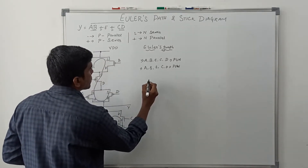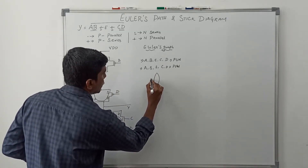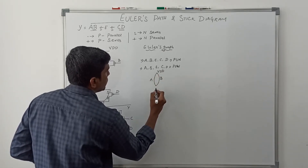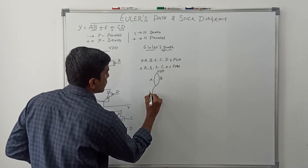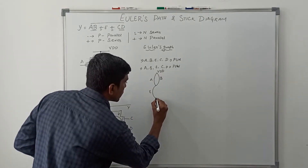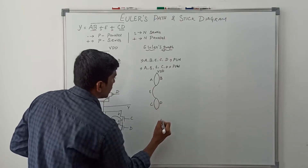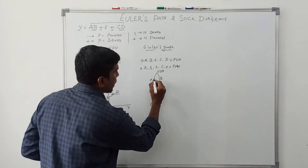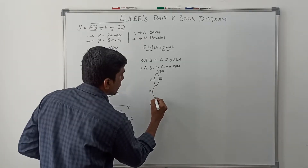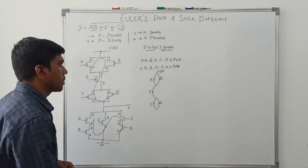Now I am going to draw the Euler's graph. The Euler's graph follows path A, B, E, C, D. This transistor is A, then B, then E, then C, and D. The flow of the Euler's graph is: A to B, B to E, E to C, and finally it reaches D.